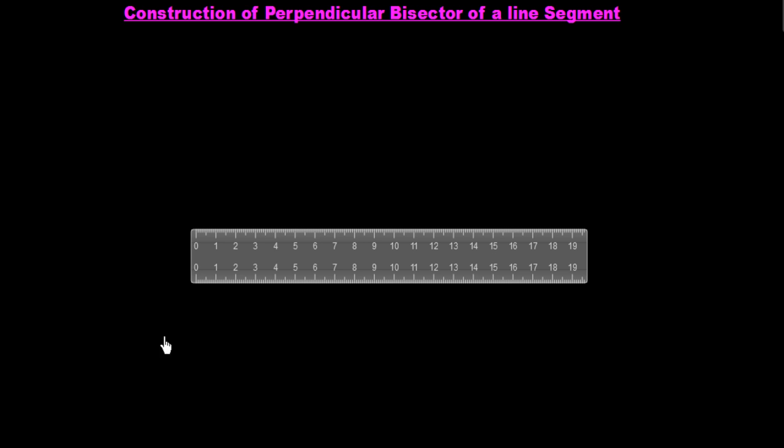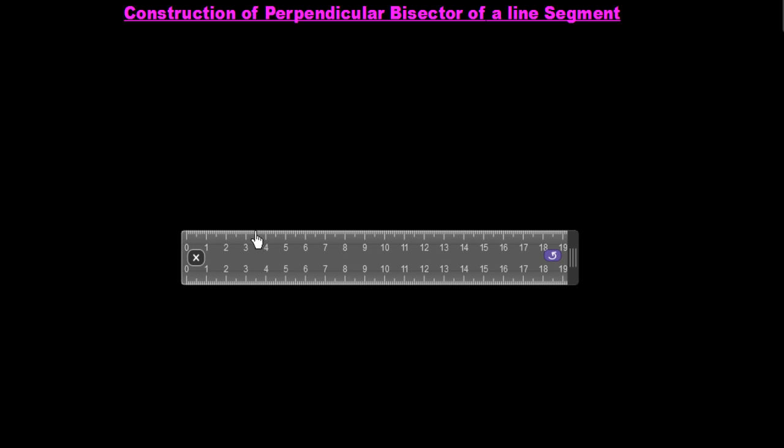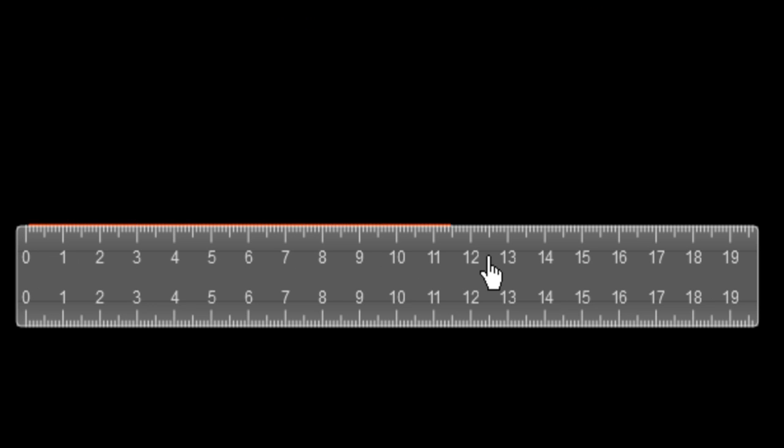For this, first of all we have to draw a line. For drawing a line we need a ruler. We will draw a line segment of 16 centimeters. Now we have drawn a line segment of 16 centimeters, and now we have to draw the perpendicular bisector of this.